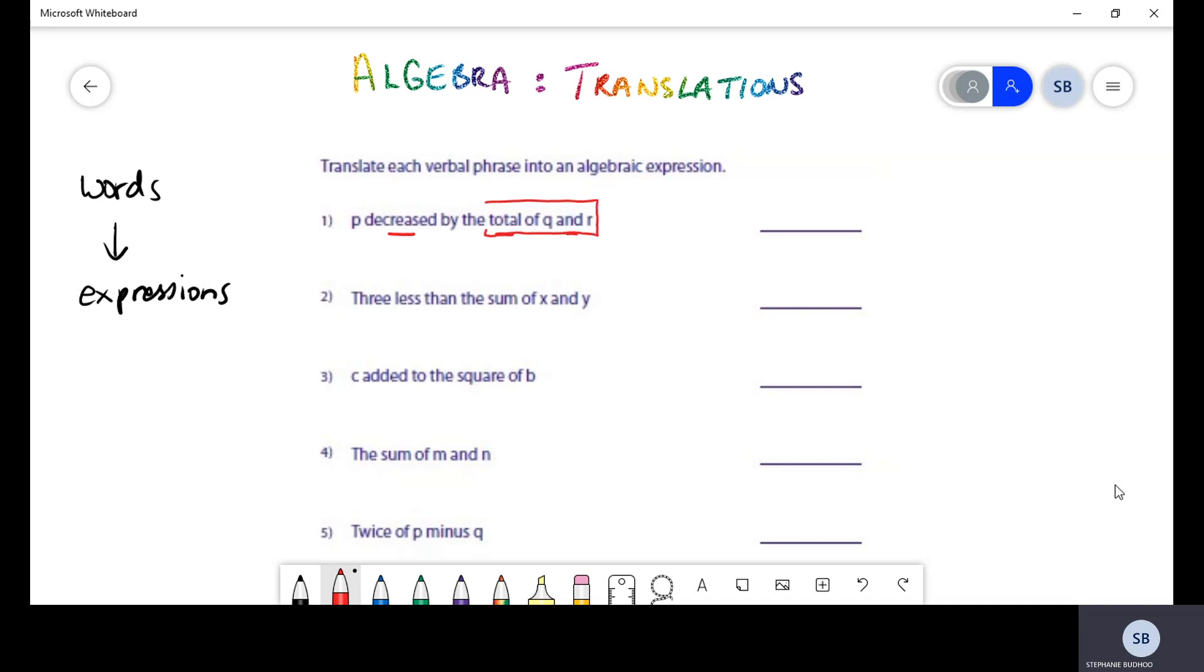The total - this part here, the total of q and r - when I read it I am thinking that the total of q and r is represented by q plus r. So I can translate that from words into a mathematical expression. Then they're saying p decreased by, so p is apparently the bigger one and it's being decreased by. So we can have p subtract, and because this was a calculation that was done together as one unit, we will place it within brackets.